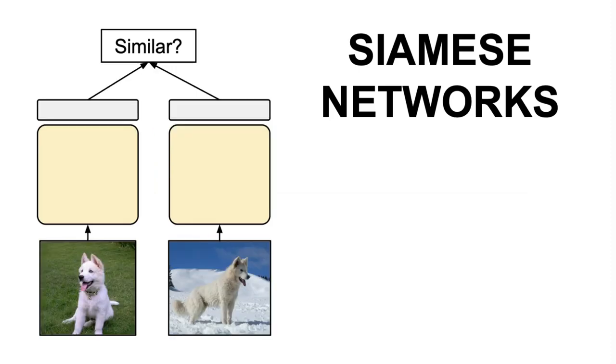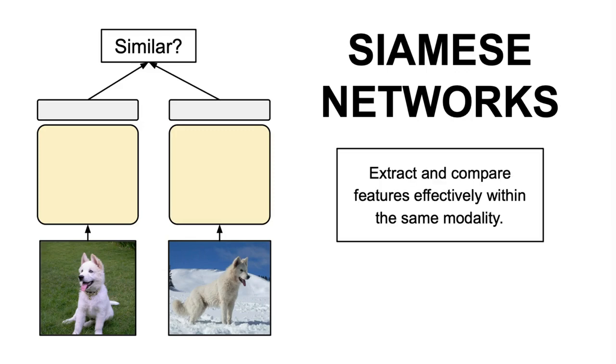In short, the Siamese architecture shines in scenarios where the goal is to assess the likeness or dissimilarity between pairs of input samples. By sharing weights between the branches, the network learns to extract and compare features effectively, making this type of architecture popular in applications such as signature verification, facial recognition, and even in some natural language processing tasks, where the focus is on measuring the similarity between text sequences.